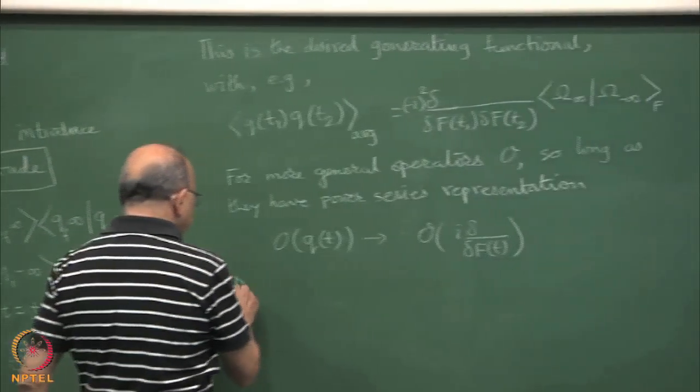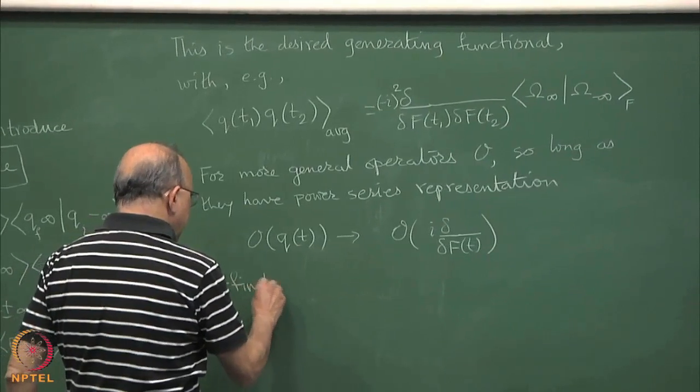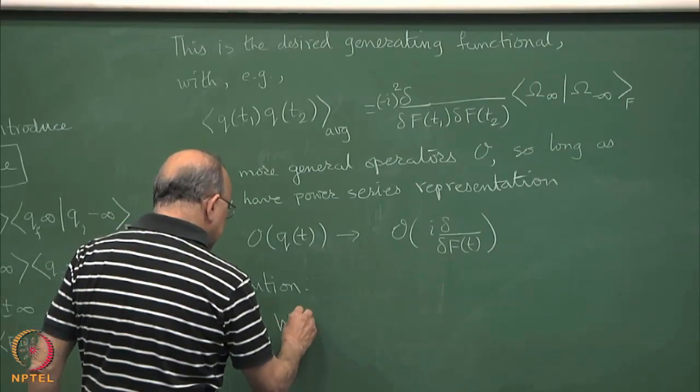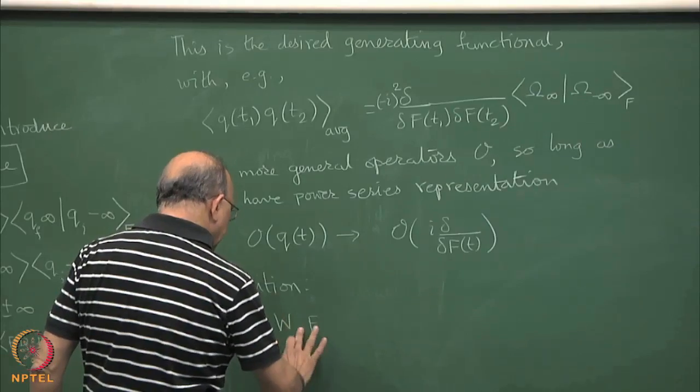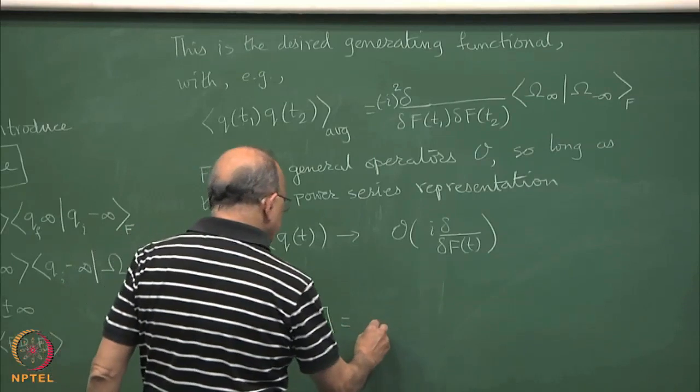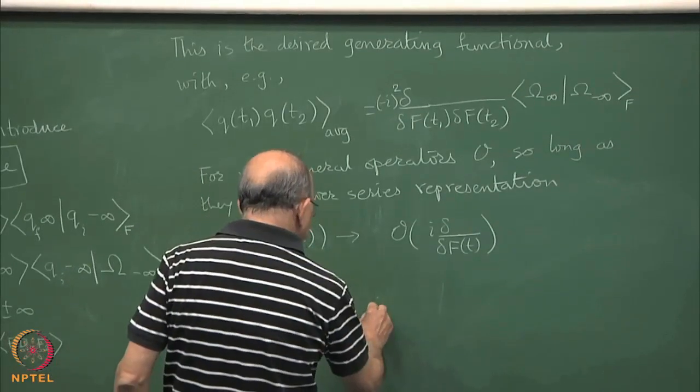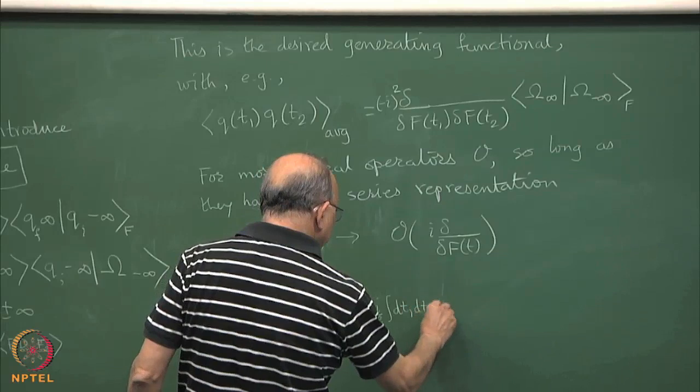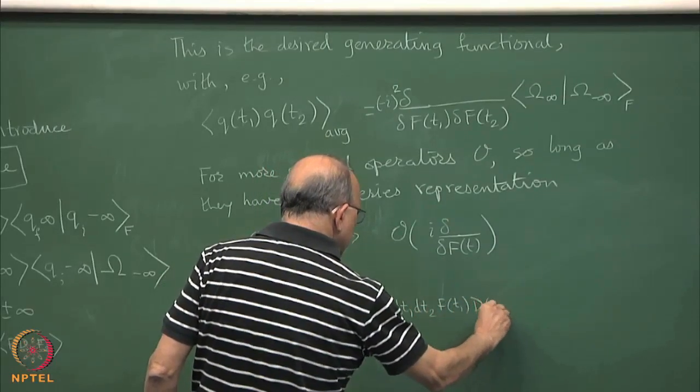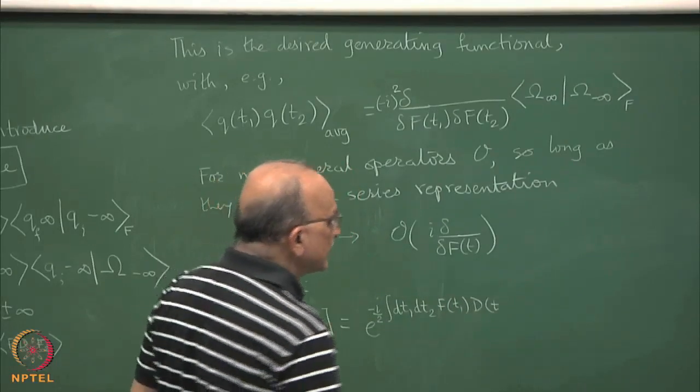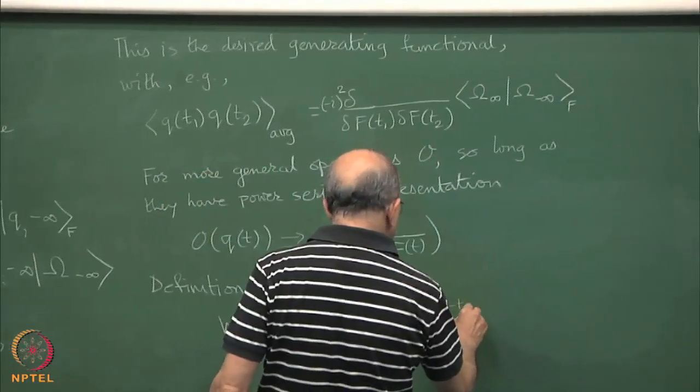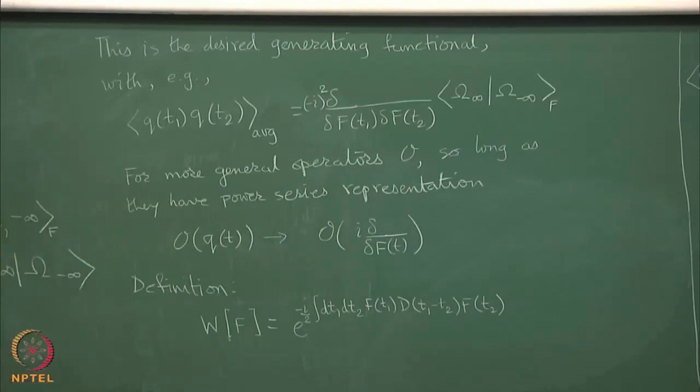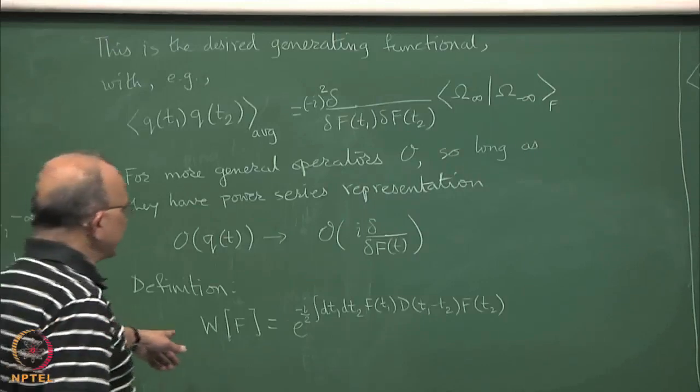We define w(f), where it is f(t), so w(f) is just e raised to r phi times d(t1 minus t2) full form of f df. We call this expression w(f).